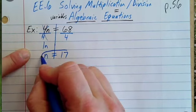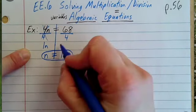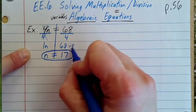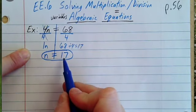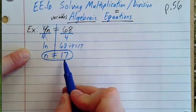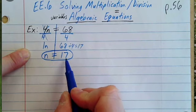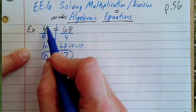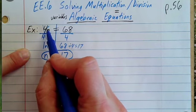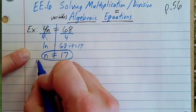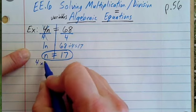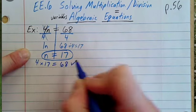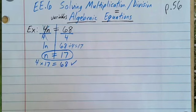You may need to use a calculator here. Plug in 68, divide by 4, and you get 17. So how can I check to make sure this works? I'm going to put 17 in for n and check: 4 times 17 equals 68. That is correct.